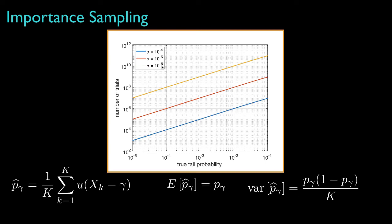If we want a standard deviation on the order of 10 to the minus 6, then for tail probabilities greater than 10 to the minus 5, we'd need to use over 10 million trials. It'd be nice if there was a way to do this with fewer trials.